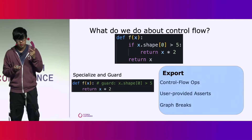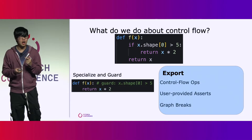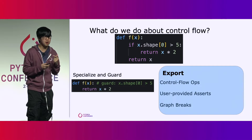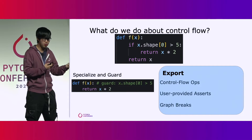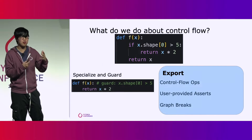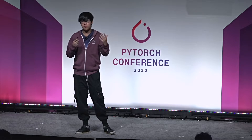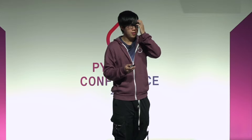Although specializing and guarding is a very useful technique, there are many other tools in the toolbox — particularly for the export path that Michael mentioned earlier. For example, if you really want everything in a single graph and don't want to specialize, we provide control flow ops where you can manually ensure that both branches are captured in a single graph. Those are the main components of our symbolic shape system.